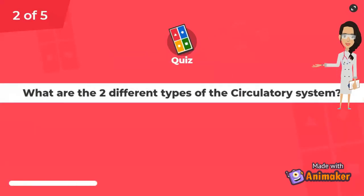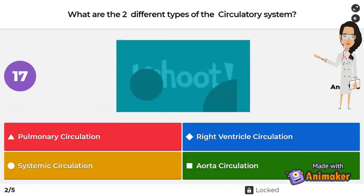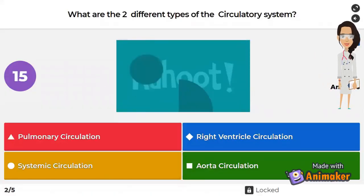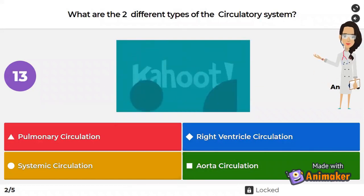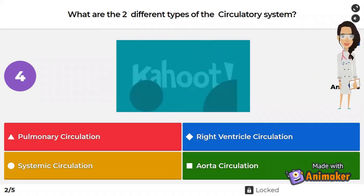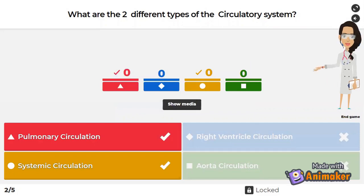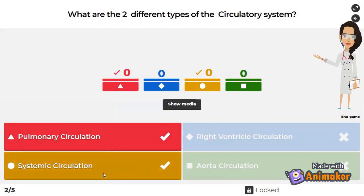Another double point! What are the two different types of circulatory system? Pulmonary circulation, right ventricle circulation, systematic circulation, or aorta circulation? If you said pulmonary circulation and systematic circulation, you are correct!